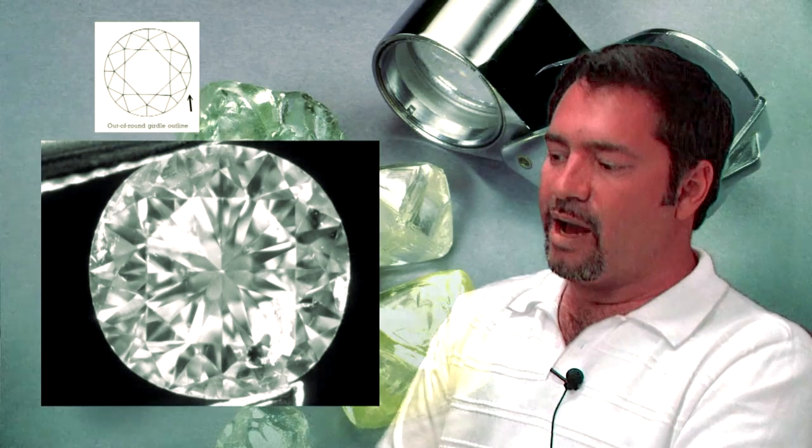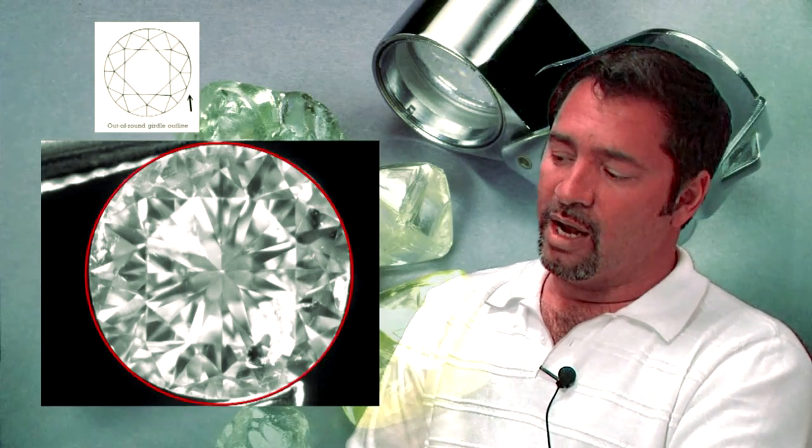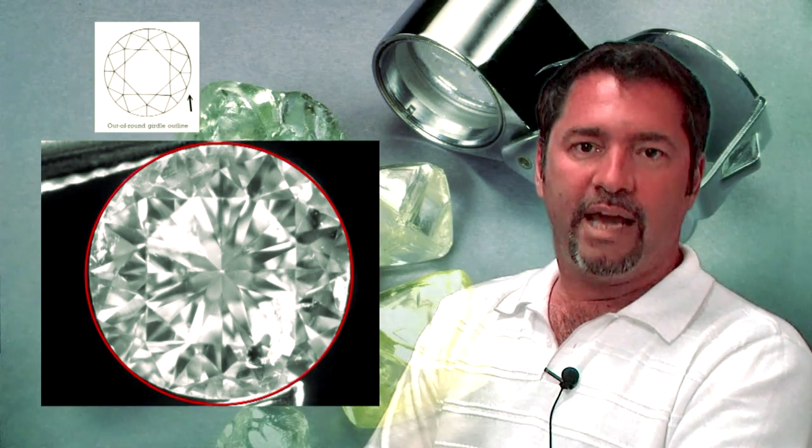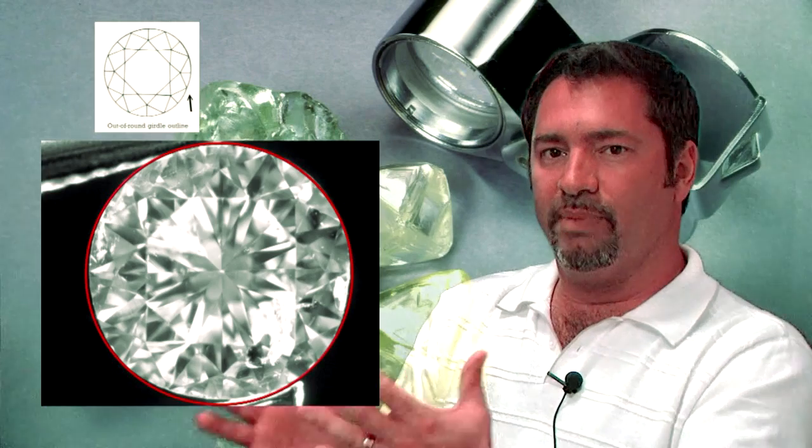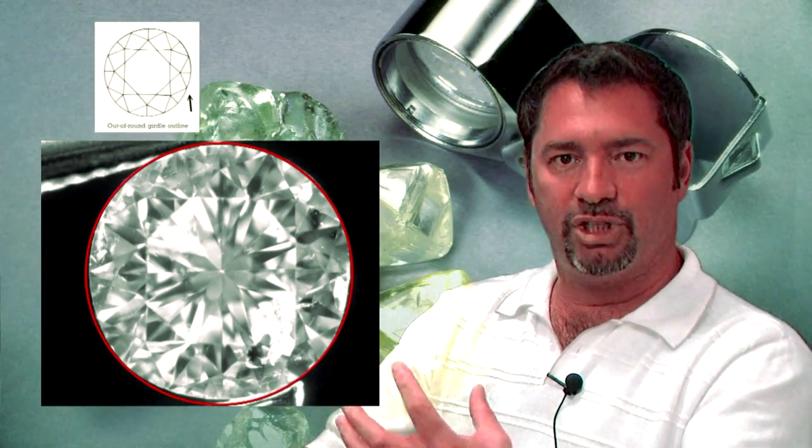Out of round girdle outline is another common feature seen in older cut diamonds and even modern diamonds that aren't cut well. The diamond won't be a nice round shape, but will have some off feature in the circular shape of the stone.